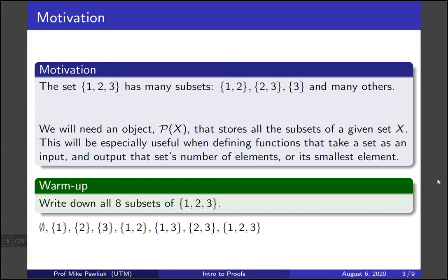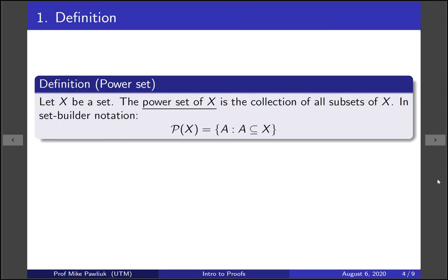Here are all eight subsets: there's the empty set, there are three sets with a single element, three sets with two elements, and one set with three elements. Now we get to the definition. Let x be any set; then the power set of x is the collection, or the set, of all subsets of x. In set-builder notation, the power set of x equals the set of all A such that A is a subset of x. You collect all of the subsets of x and put them into one set. This can be a little confusing because it is a set of sets, but that's totally allowed — we're allowed to put sets inside of sets.